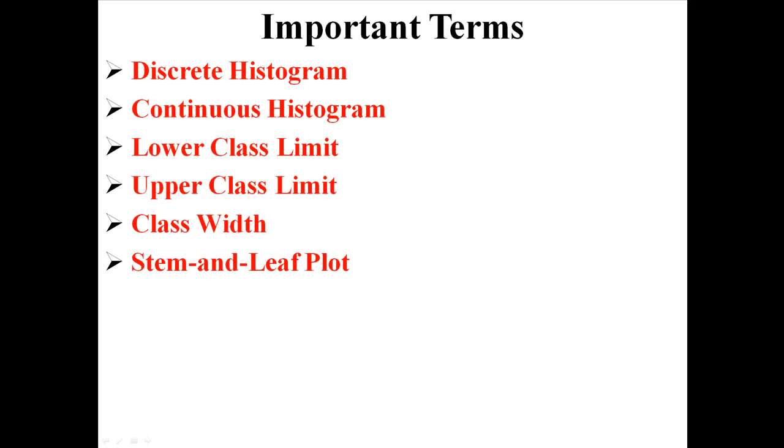So that's it for this chapter. We have discrete and continuous histograms. In the continuous histograms, you're going to have lower class limits, upper class limits, and class widths. And also, if you don't want to do that, there are stem and leaf plots.